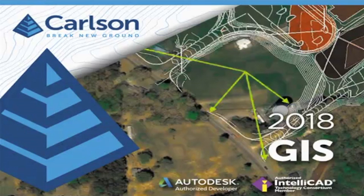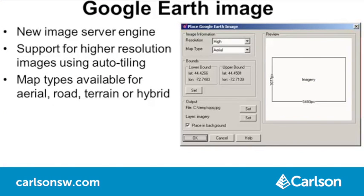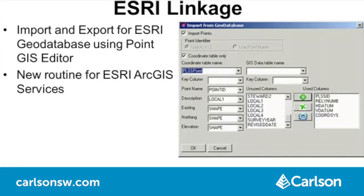In Carlson GIS, Google Earth Image uses a new image server engine that isn't affected by the different Google Earth versions installed on your computer. The program now supports higher resolution for larger areas by automatically tiling the images from the server. More map types are available besides aerial, including road, terrain, and hybrid. The Point GIS Editor now supports import and export for ESRI geodatabase, and there is also a new routine for using ESRI ArcGIS services.